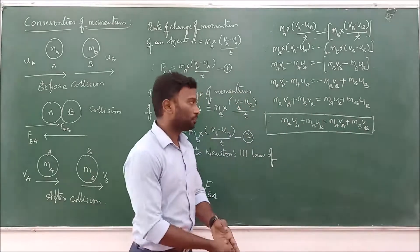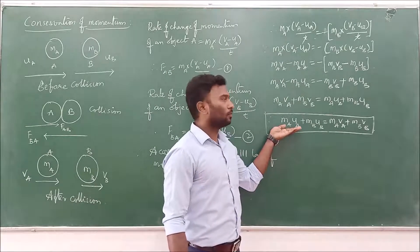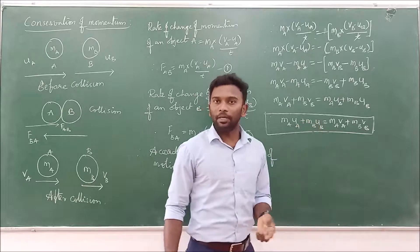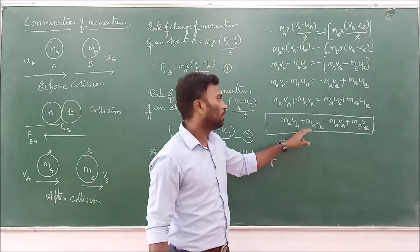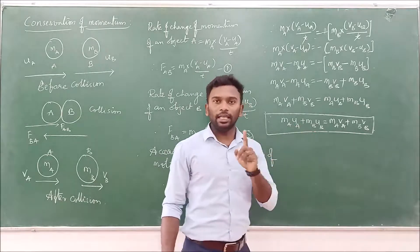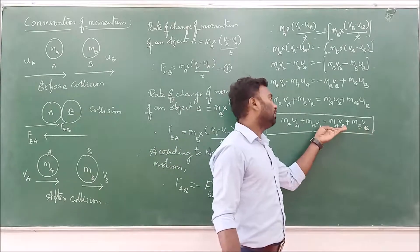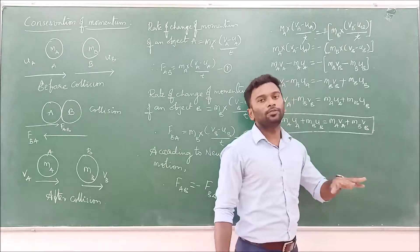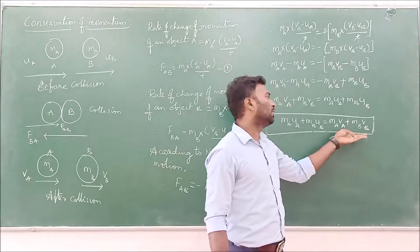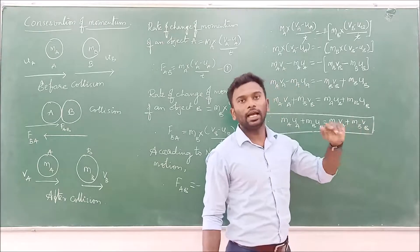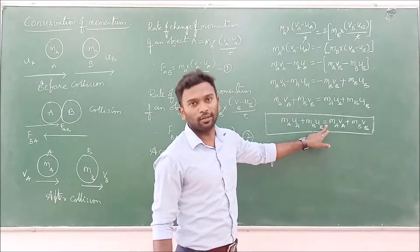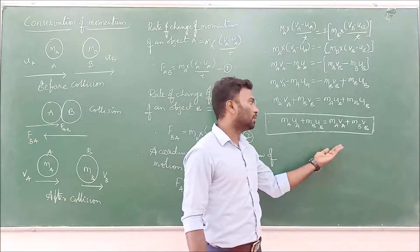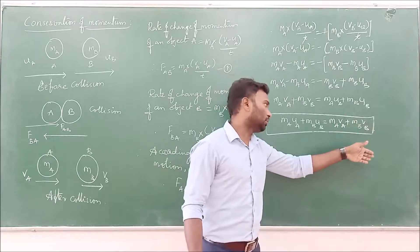If you observe this equation: MA times UA is the momentum of object A before collision, and MB times UB is the momentum of object B before collision. Their sum is the total momentum of objects A and B before collision. MA times VA is the momentum of object A after collision, and MB times VB is the momentum of object B after collision — that is, the total momentum of objects A and B after collision. So both are equal.